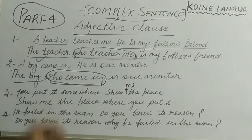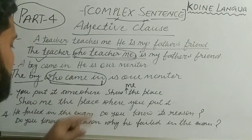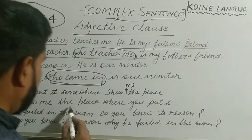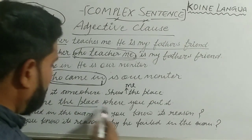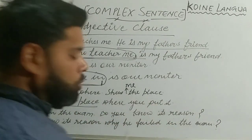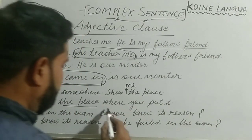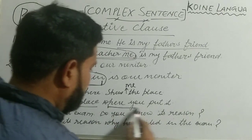Another example: 'Show me the place where you put it.' Here, 'where you put it' is the adjective clause that defines the noun 'place.'